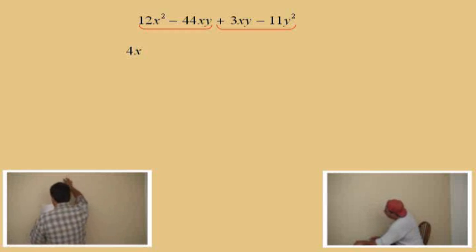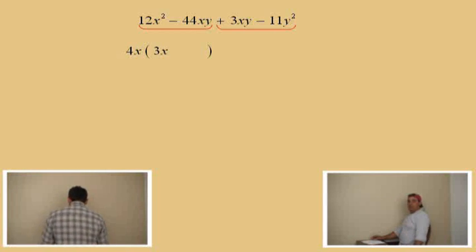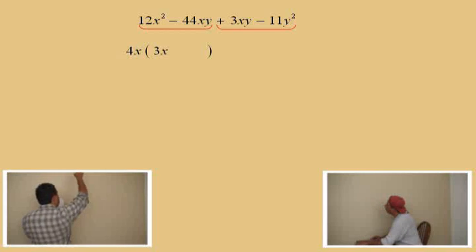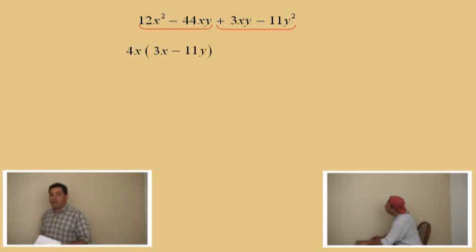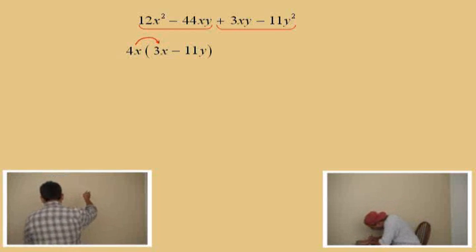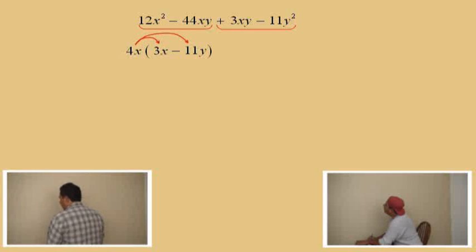Now, Charlie, what do I multiply the four x by to get that 12x squared? What is it, Charlie? Three x. Three x. Very nice, Charlie. Now, we go to the next term. What do I multiply the four x by to get the negative 44xy? Don't forget about the y. Negative 11y. That is a negative 11y. There it is. So, let's review what Charlie said. You multiply 4x times 3x is the 12x squared, and the 4x times the negative 11y is the negative 44xy. There we go.